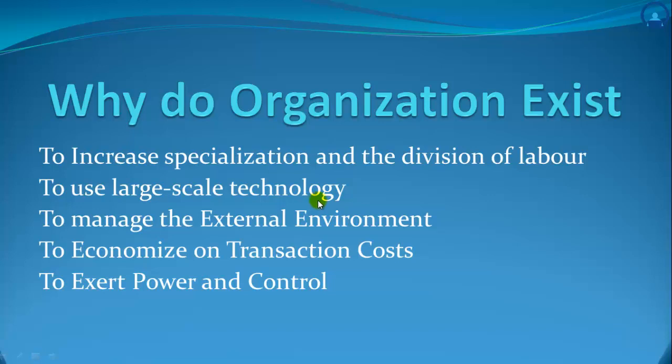Organizations are able to take advantage of economies of scale and scope that result from the use of modern automated and computerized technology. Economies of scale are the cost savings that result when goods and services are produced in large volumes by automated production. Economies of scope are the cost savings that result when an organization is able to use underutilized resources more effectively because they can be shared across several different products or tasks. Both can be achieved, for example, when an automated production line can make several different types of products simultaneously.